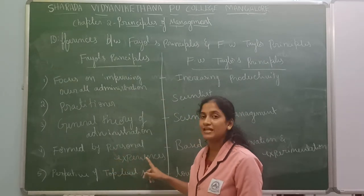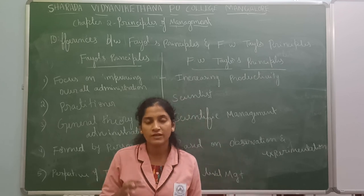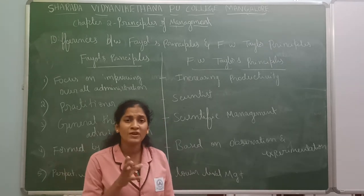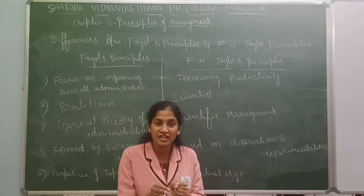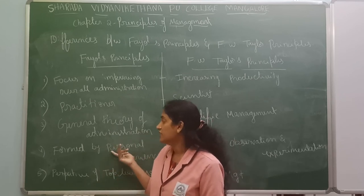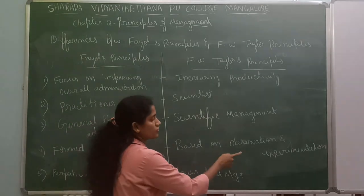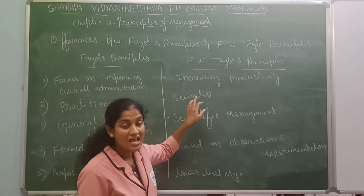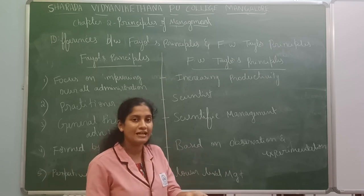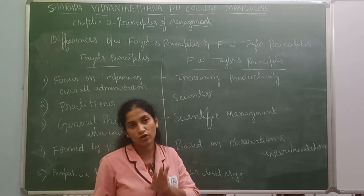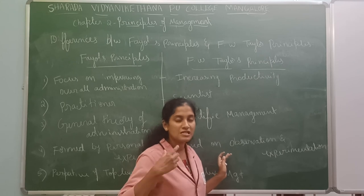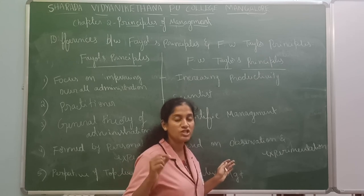Fayol's principle is formed from personal experiences — he was working in an institution, gained experience, and put those personal experiences in the form of principles. That is why he tells that things should be arranged orderly, all should be treated equally, and payment should be done fairly. Whereas Taylor's principle came based on observation and experiment — he conducted certain experiments and based on that gave his principles.